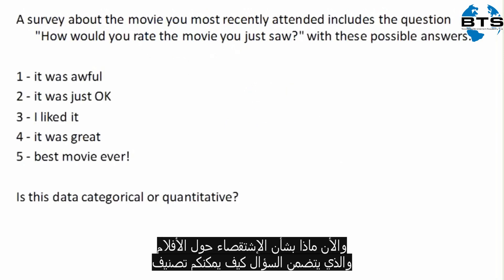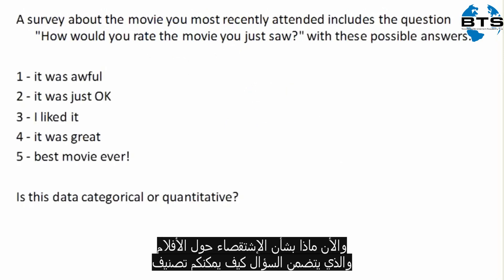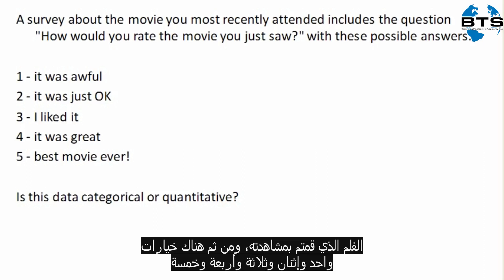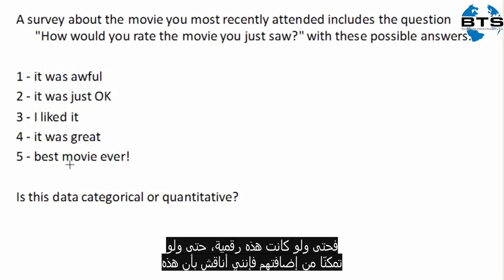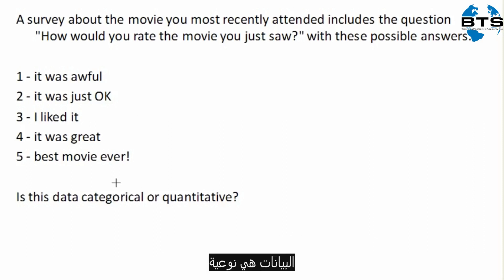Now, what about a survey about the movie that includes the question: how would you rate the movie that you just saw? It gives options one, two, three, four, and five, associated with these sort of descriptions here. So now, even though these are again numerical, and even though we could try adding them, I would argue that this data is, in fact, categorical.